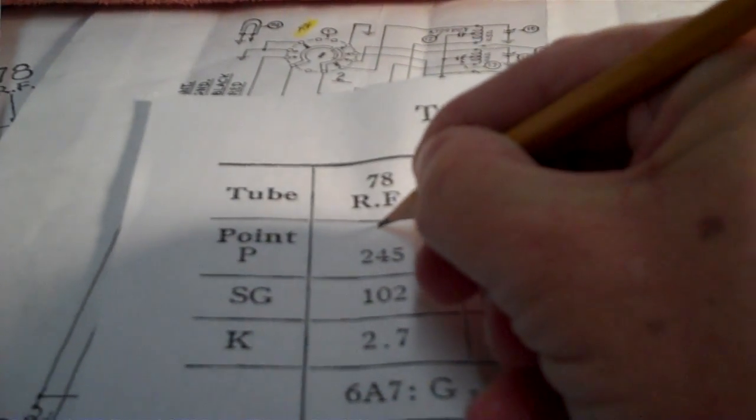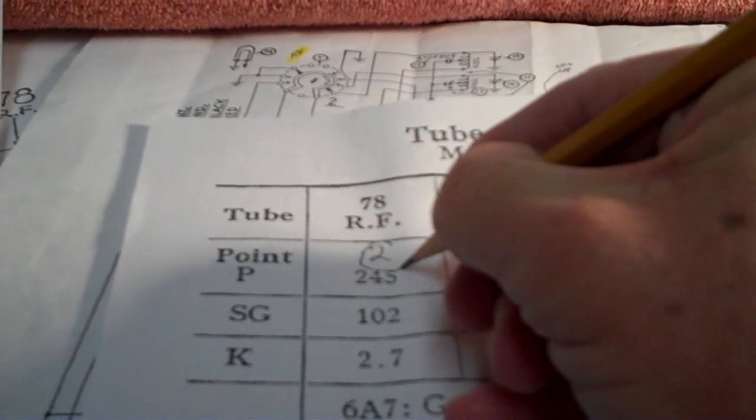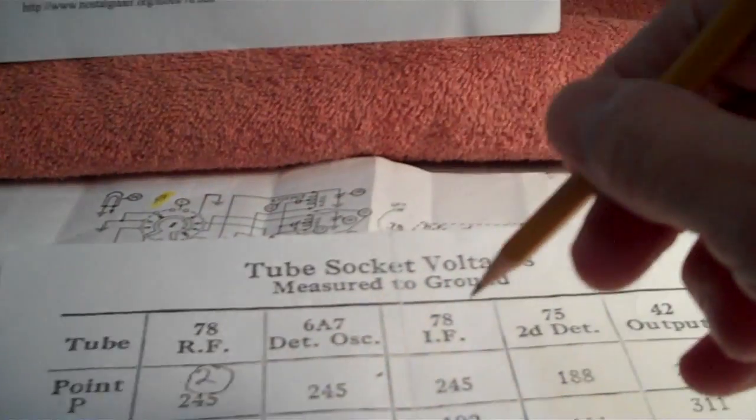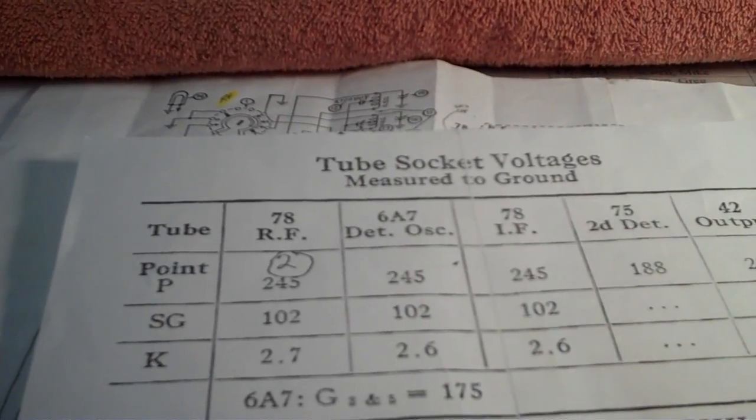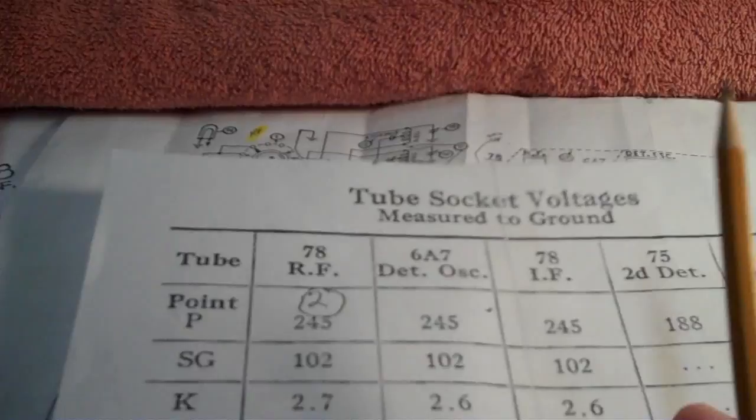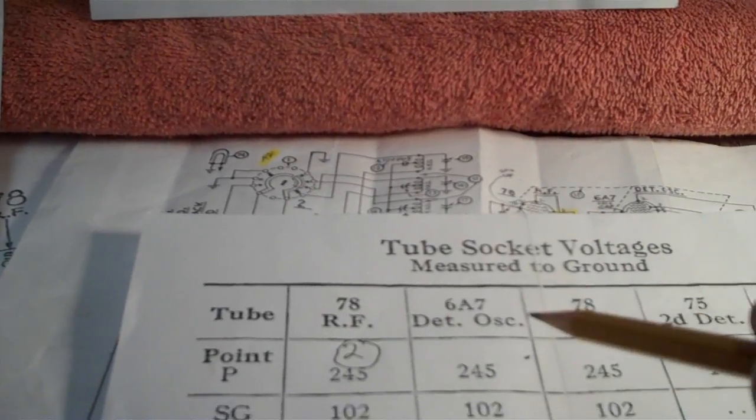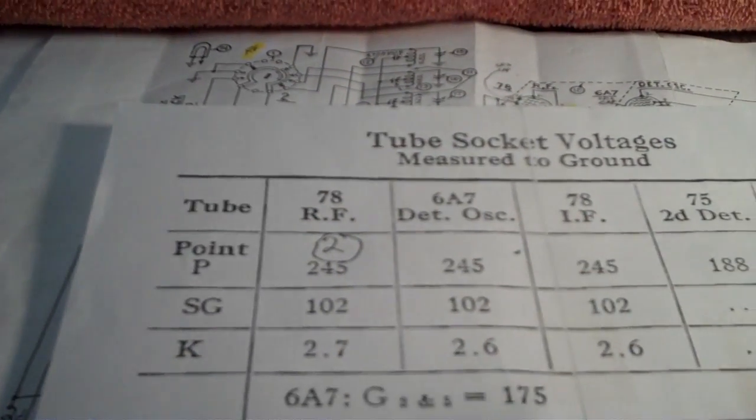So I'm going to go ahead and write pin 2 down there. Nice big letter, and I'm going to circle it. I'm going to do that for each one of these. That way, when I'm up underneath the chassis there, and I've got my little probe, and I'm sticking around in there, I don't want to have to keep referring back to the drawing to figure out what pin is what. It'll all be right there in front of me. So let me go ahead and finish marking each of these.